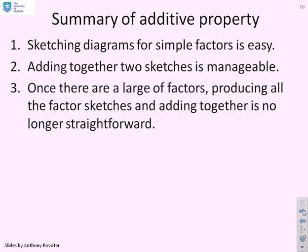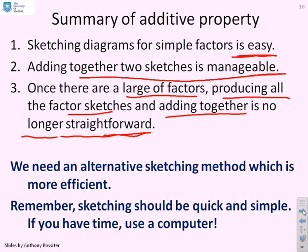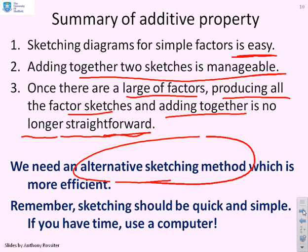So a summary: sketching diagrams for simple factors is easy in principle. Adding two sketches together is just about manageable. But once there are a large number of factors, producing all the factor sketches and adding them together is no longer straightforward. It's certainly not quick. And so we need an alternative sketching method, which is much more efficient. And remember, what we're saying is if sketching is not quick and simple, you should be using a computer anyway. So we want the sketching to be quick and simple, not just because it gives insight, but because otherwise computers are a better option.